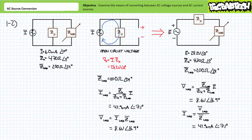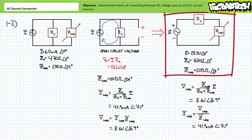Our second illustrated example features a 60 milliampere current source in parallel with a fixed impedance of 470 ohms at an angle of 0 degrees, supplying a variable load impedance currently set to 200 ohms at an angle of 24 degrees. With the variable load impedance removed, an application of Ohm's Law demonstrates the open circuit voltage will be 28.2 volts at an angle of 0 degrees. Therefore, a voltage source of 28.2 volts at an angle of 0 degrees in series with a fixed impedance of 470 ohms at an angle of 0 degrees should behave identically.